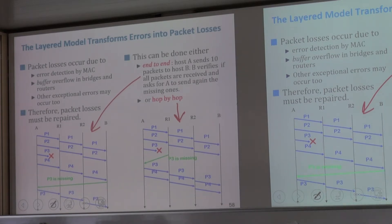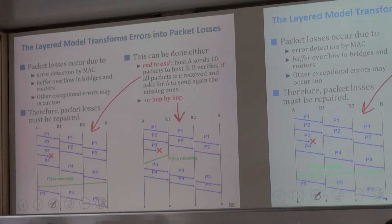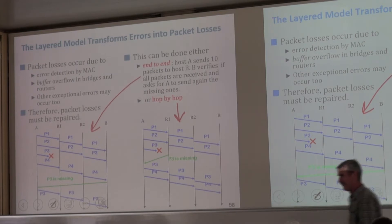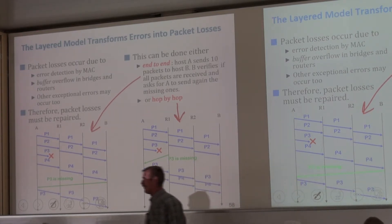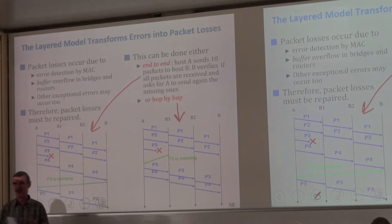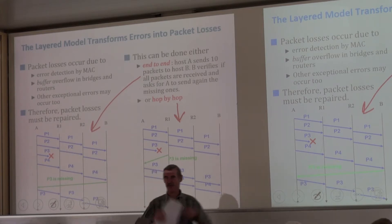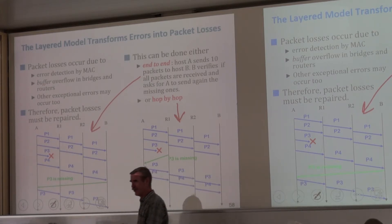We could do the same thing locally. I send a packet to a router; the router doesn't receive it, then I detect that it's missing and I retransmit it. Here we detect end to end and repair end to end. Here we detect locally and repair locally. Which is better? In general, in life, it's better to solve local problems locally. That's the general rule of complex systems. If you have a problem at EPFL, you don't want to make it a worldwide problem.